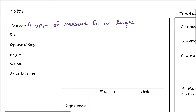Next, we're going to talk about a ray. A ray is part of a line with one endpoint and one end that extends infinitely. So a ray has a starting point — a point where it starts — but then it goes on in one direction forever.